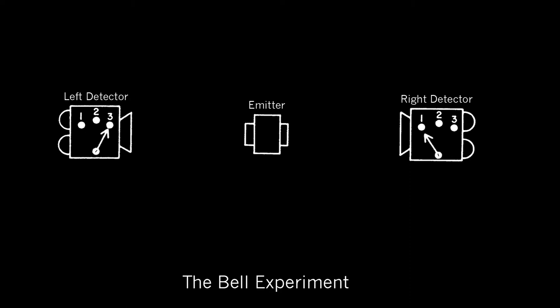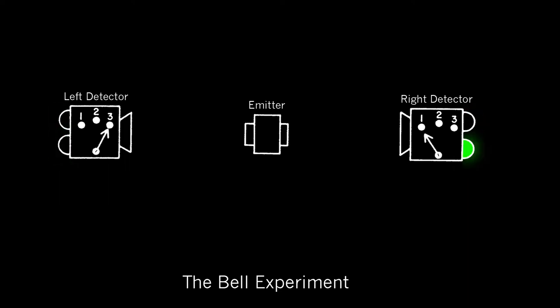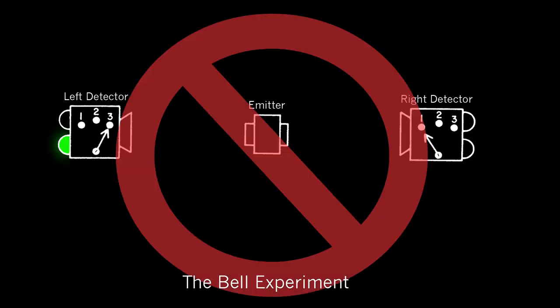When you press the button and a particle goes to each detector, one and only one light will light up on each of these receivers. Either the red light will light up on one of the receivers, or the green light will light up. So you get a red light or a green light on the left and a red light or green light on the right, but you never get a failure to light on one side or the other, and you never get both lights lighting up on one side or the other.